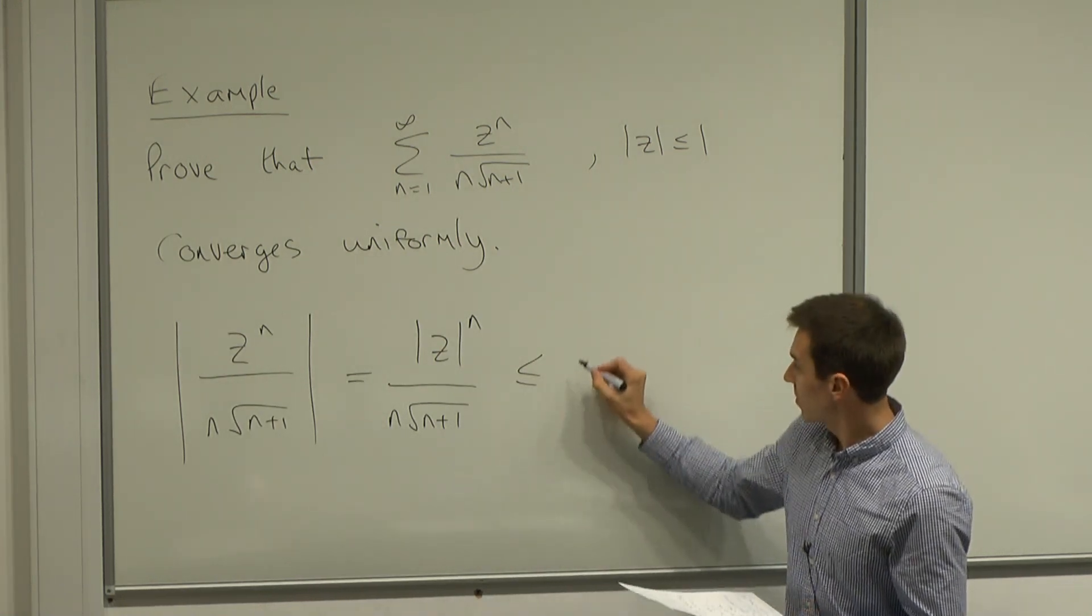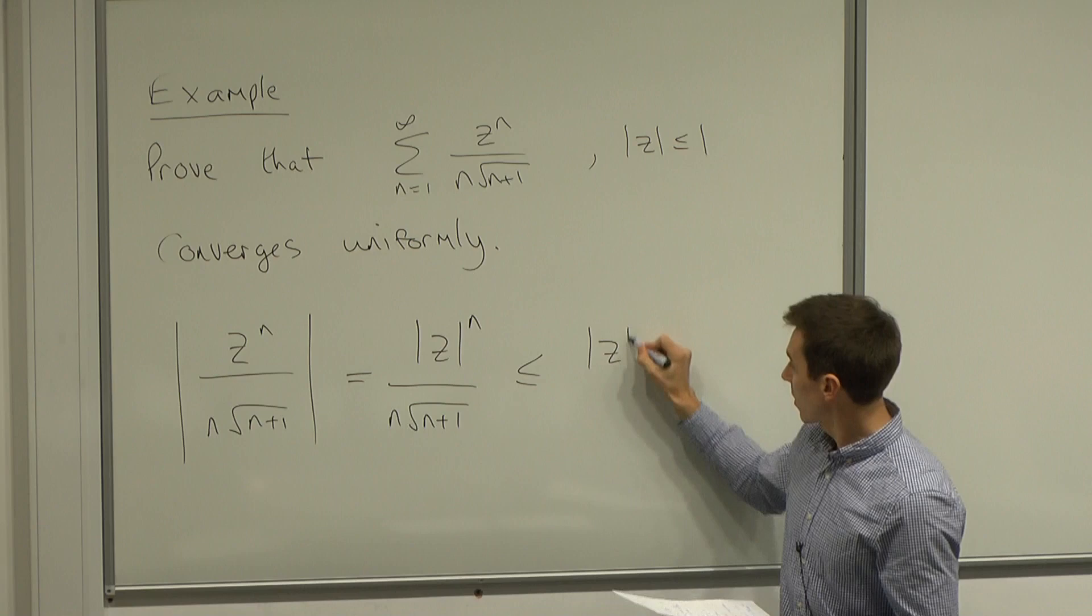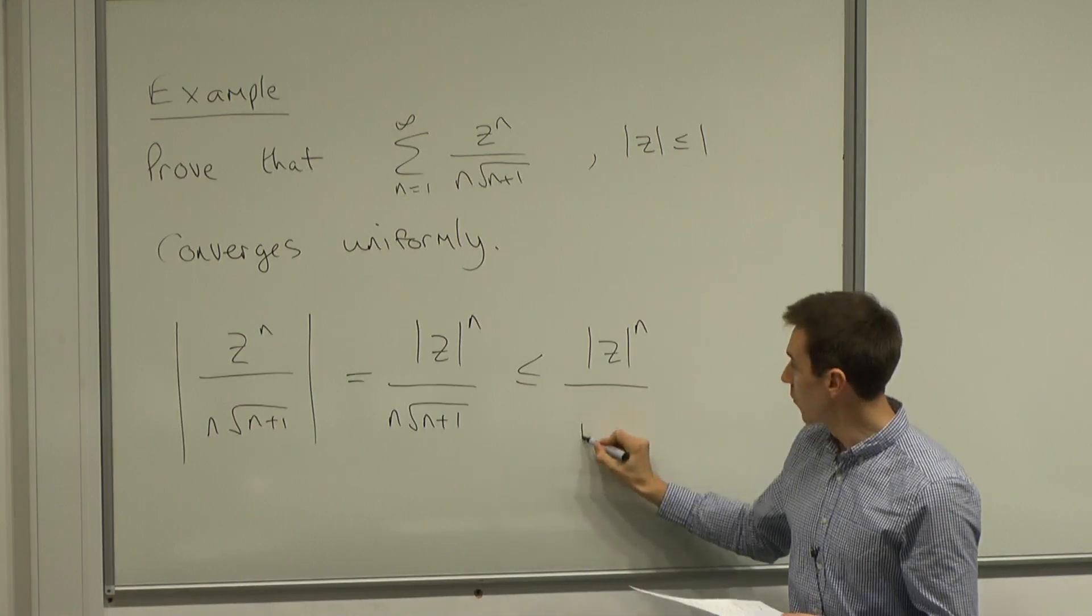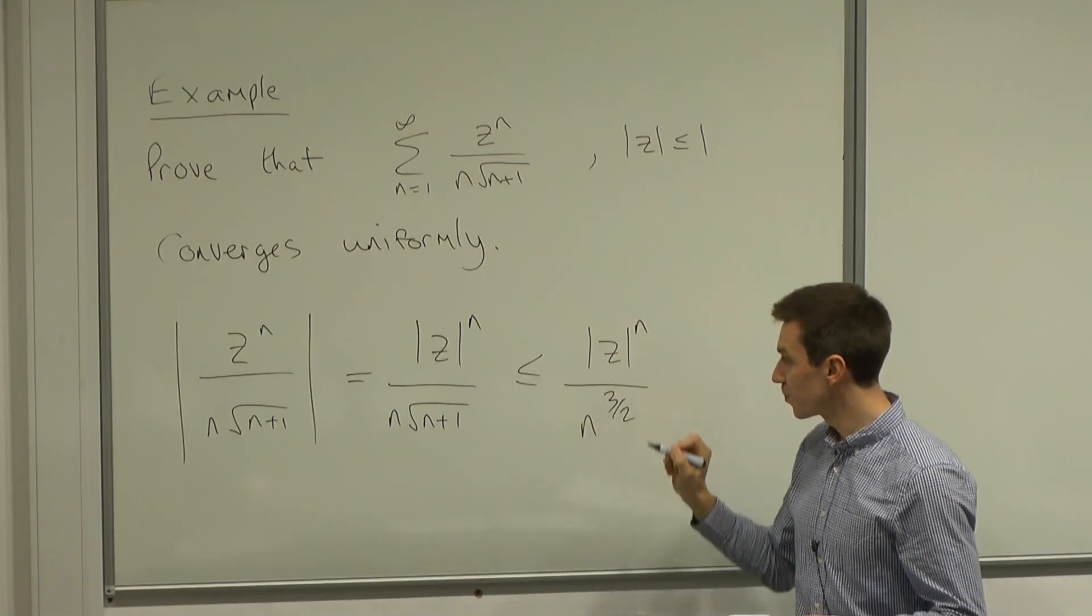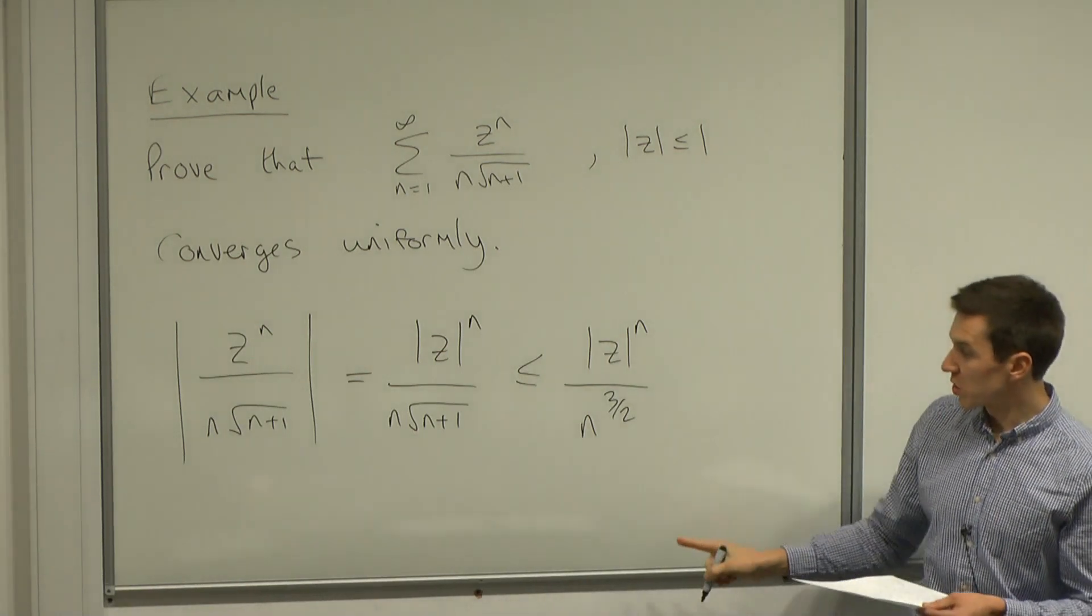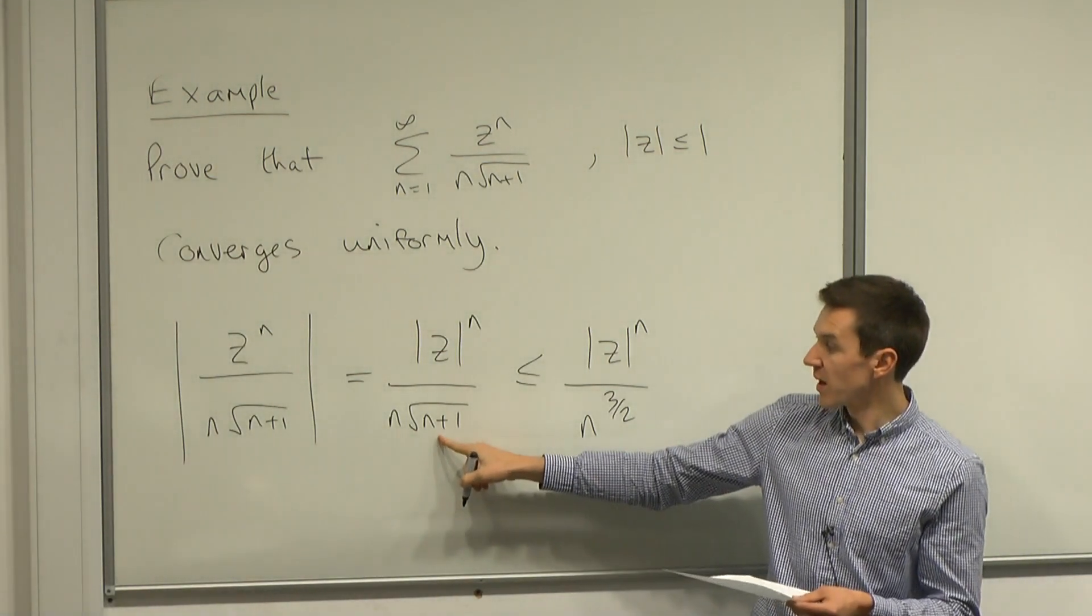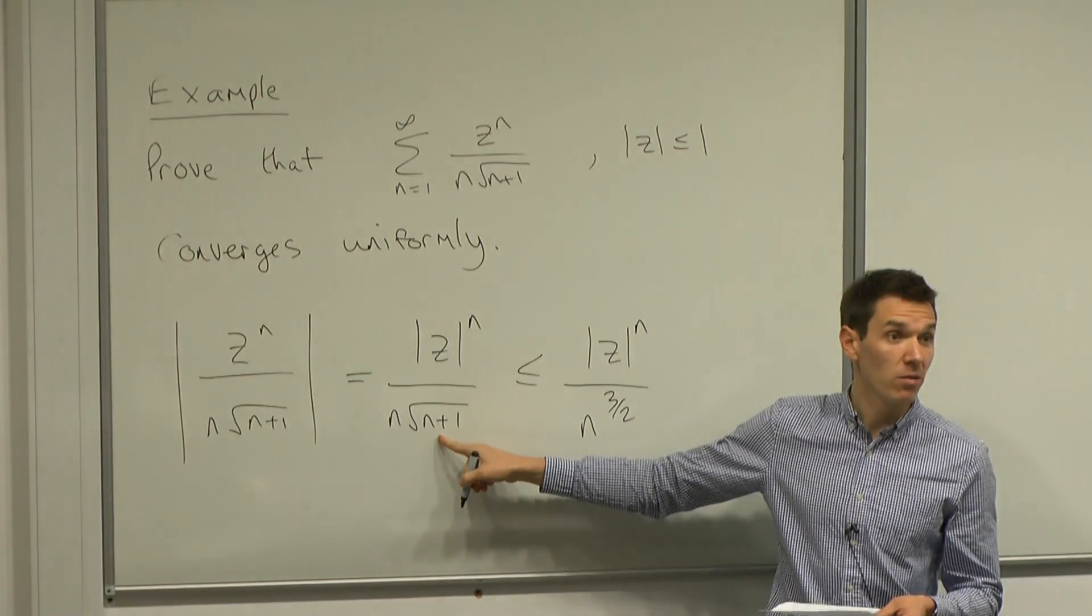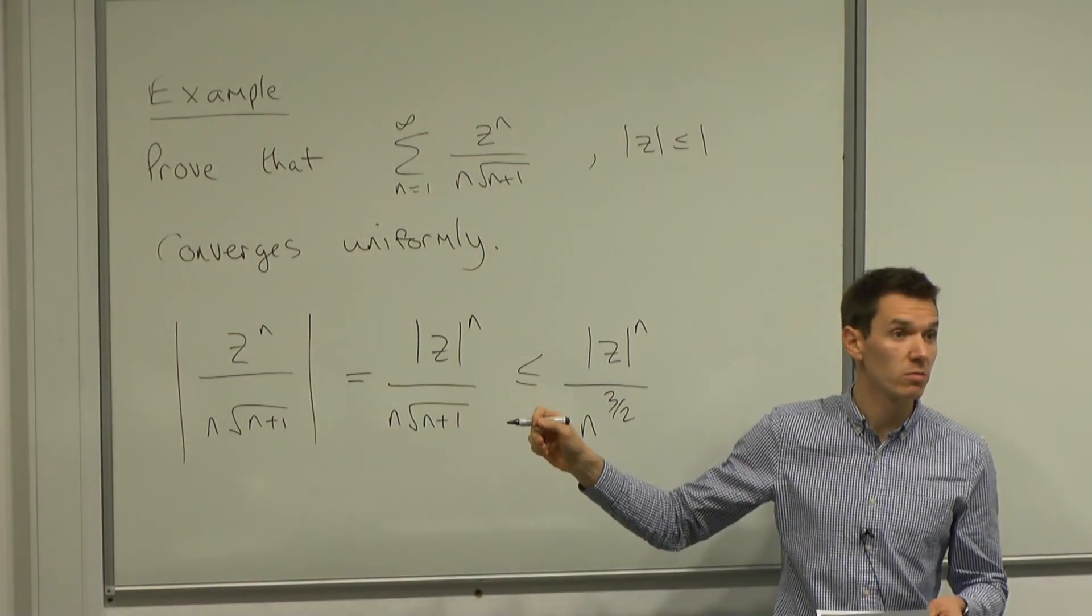We can estimate this against the modulus of z to the power of n over n to the power of 3 over 2. And this is just estimating n plus 1 with n, and collecting the powers.